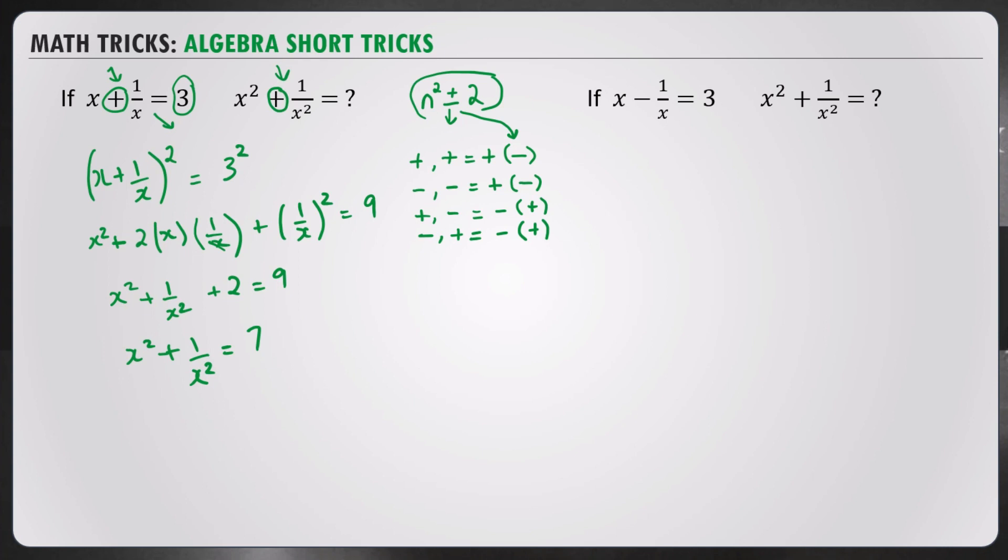Now, here we can see the only number we have to think of is 3. n squared plus or minus 2. Since we have two plus signs, we subtract 2. That'll be 9 minus 2, which equals 7. That's your answer. x squared plus 1 over x squared equals 7. One step done.